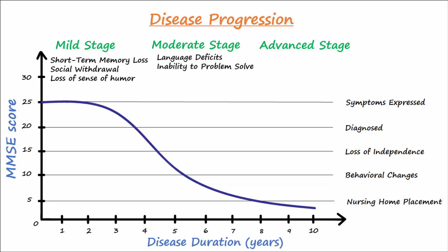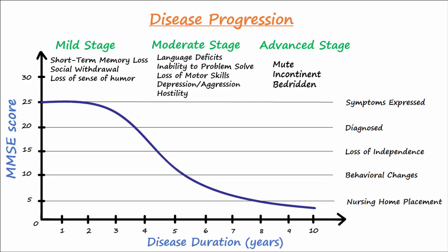Patients in the moderate stage also experience loss of learned motor skills and may become depressed or aggressive; some become hostile toward family members or caregivers and are unable to live on their own. In the advanced stage, patients become mute, incontinent, and bedridden. For most patients, the advanced stage lasts between one and a half to two years. Patients usually die from aspiration pneumonia due to losing the ability to swallow, infection, or cardiac arrest.